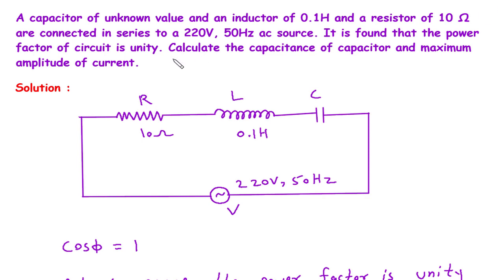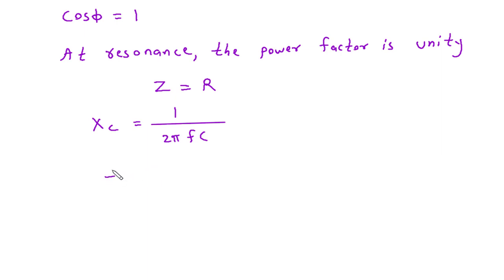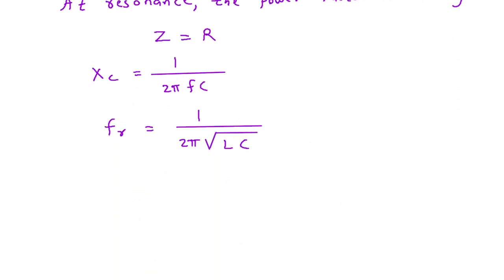First, we calculate the capacitance of the capacitor. We know X_C = 1 / (2πfC). We have the frequency but not the capacitance. So we use the resonance frequency formula: F_R = 1 / (2π√(LC)). Since the circuit is at resonance, F_R = f = 50 hertz.